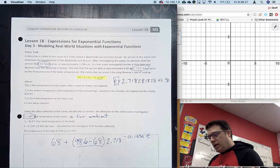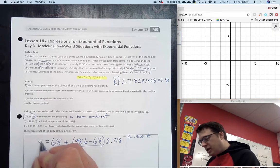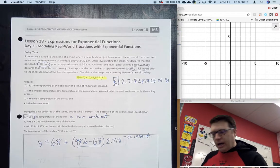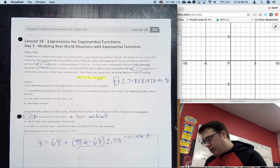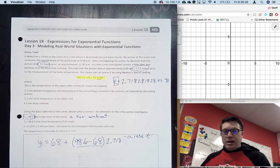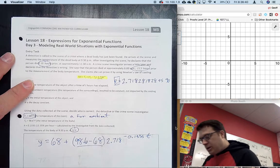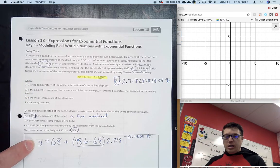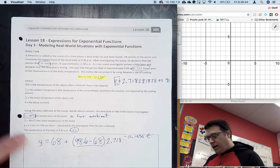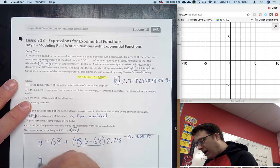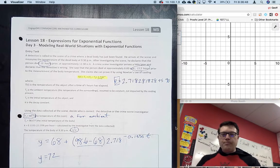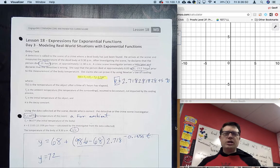K is totally related to the environment, to the power of T. So negative 0.1335 to the T. This equals Y. However, we know the person's body is showing an internal temperature of 72 degrees.